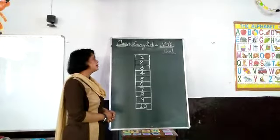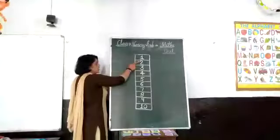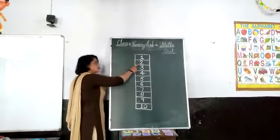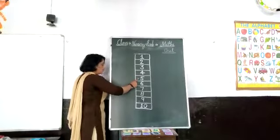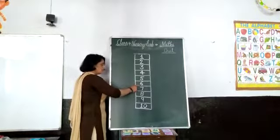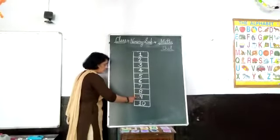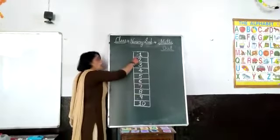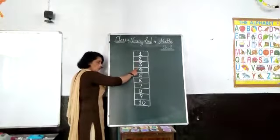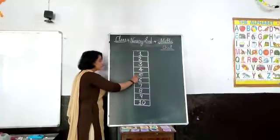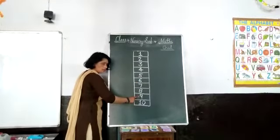Let's learn about number. Number 1 — this is the number 1, this is the number 2, this is the number 3, this is the number 4, this is the number 5, this is the number 6, this is the number 7, this is the number 8, this is the number 9, this is the number 10. 1, 2, 3, 4, 5, 6, 7, 8, 9, 10.